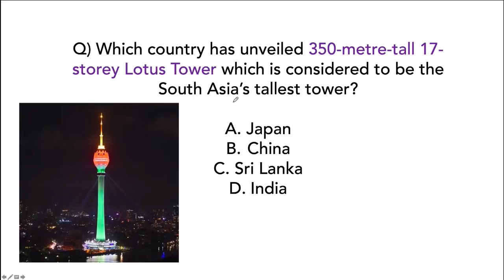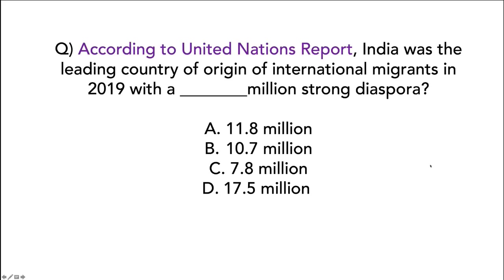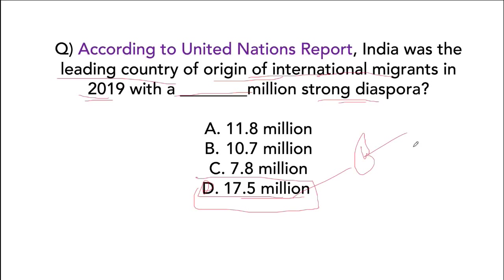Sri Lanka has unveiled a 350-meter tall, 17-story Lotus Tower, considered to be South Asia's tallest tower — 80% of this tower is funded by China. According to a United Nations report, India was the leading country of origin of international migrants in 2019, with a diaspora of 17.5 million — meaning 17.5 million Indians are currently working outside India.